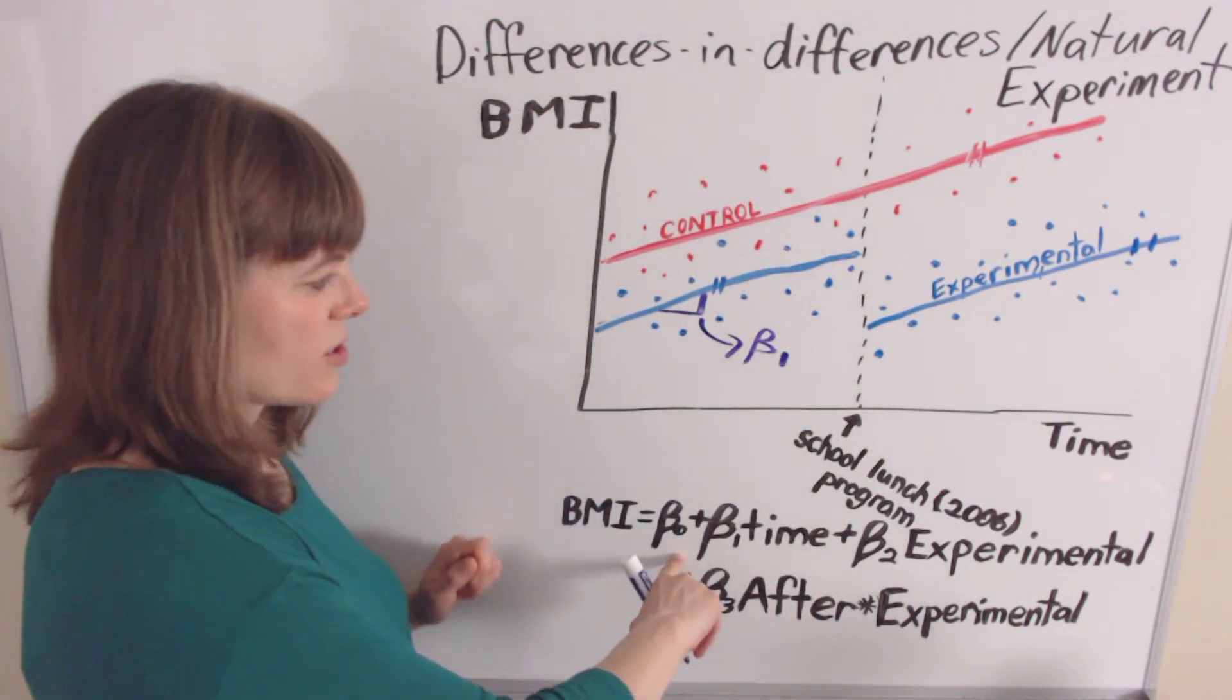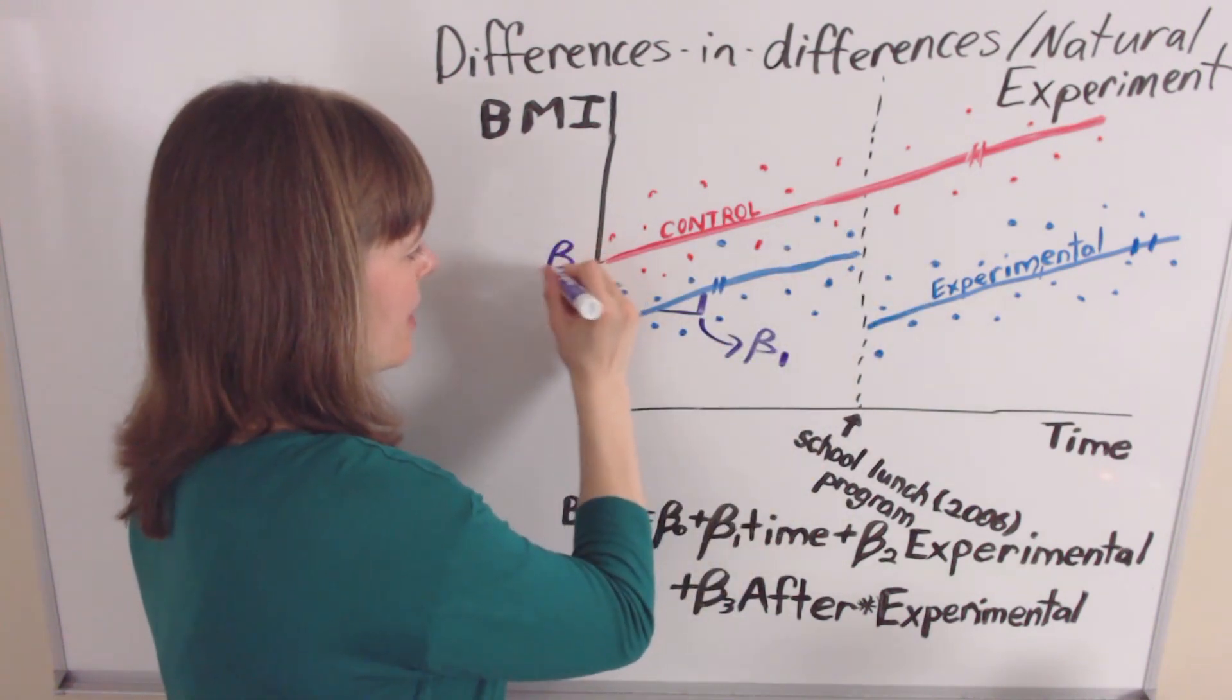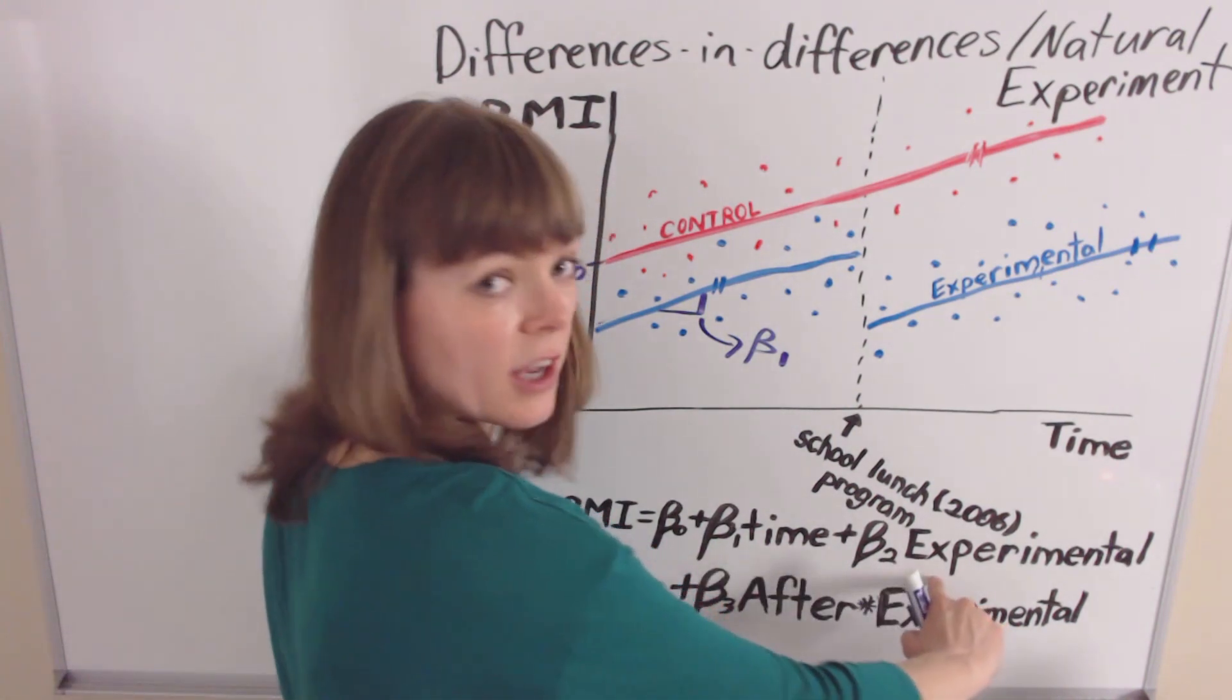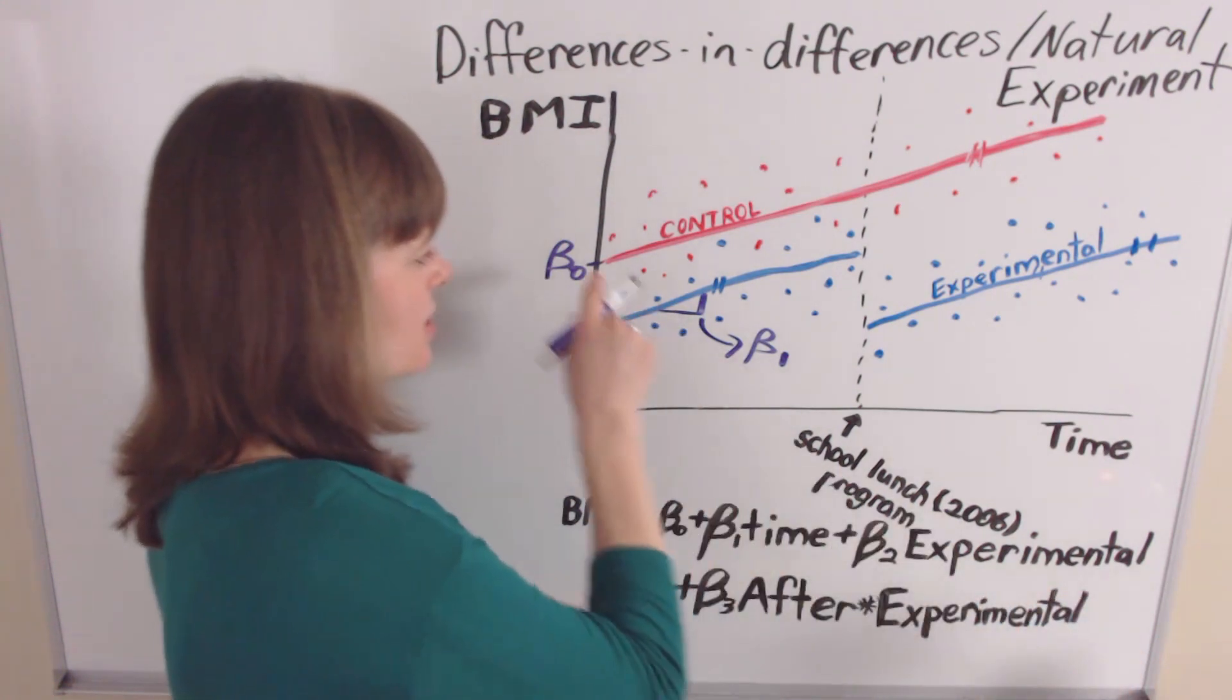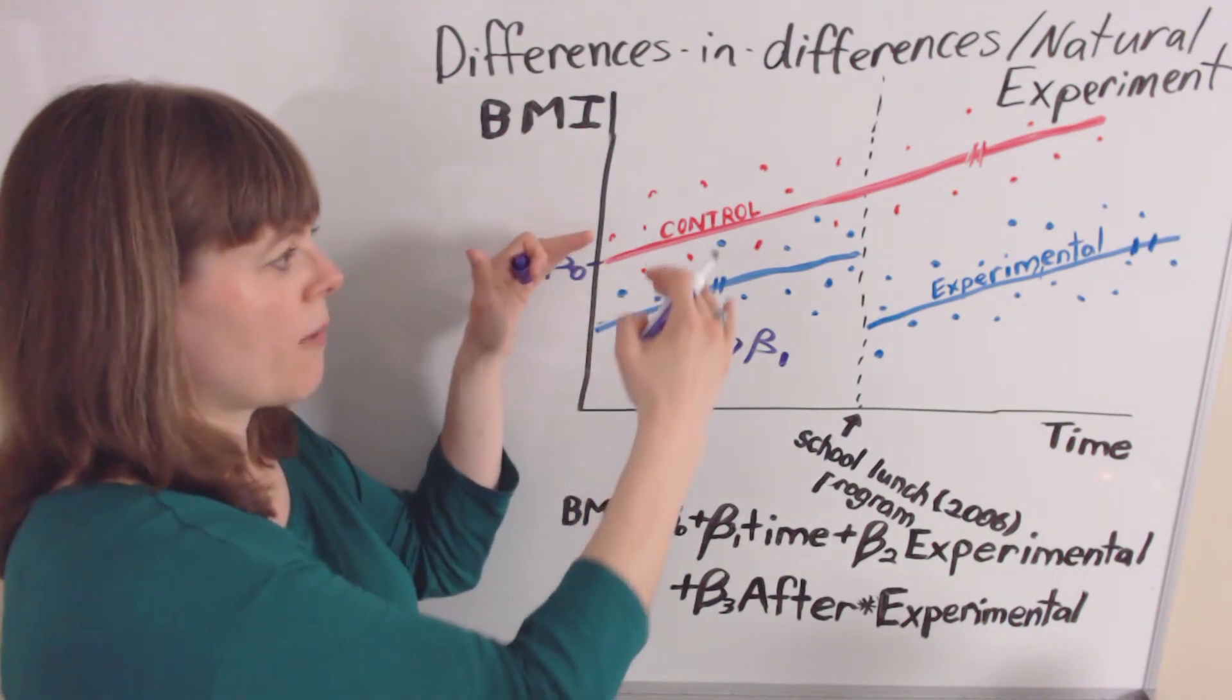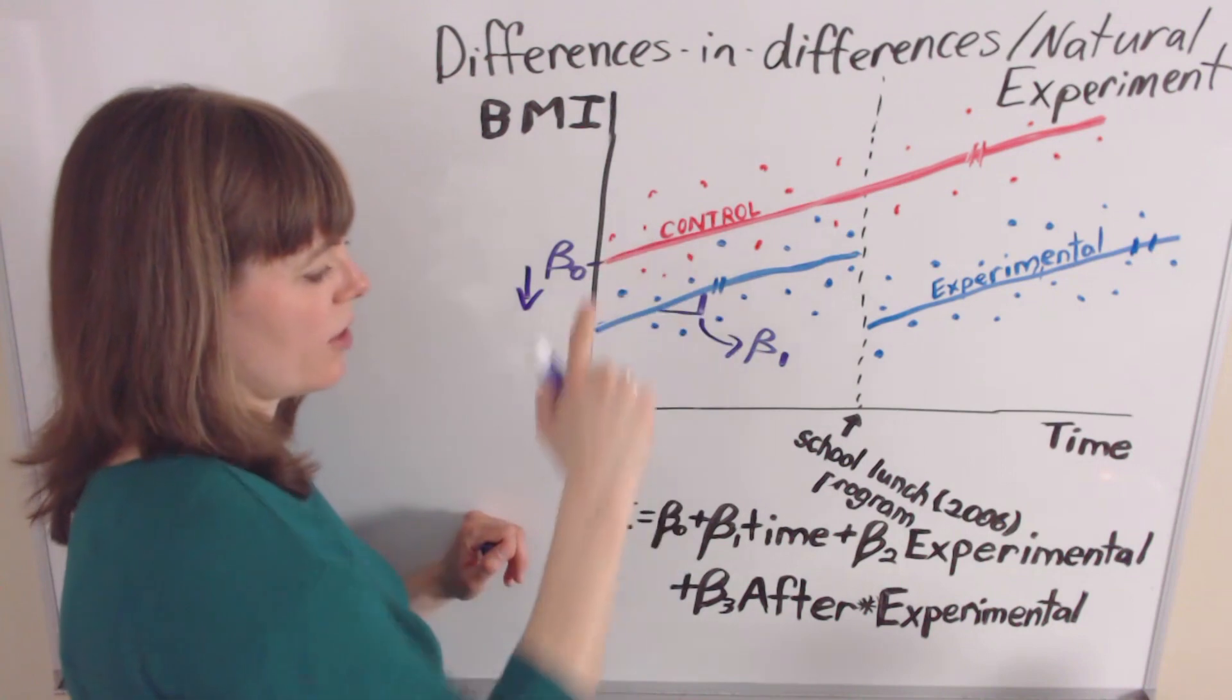The beta naught is going to represent the y-intercept for the control group, so this is beta naught. And the reason for that is because our next variable beta 2 here is going to be associated with our experimental group. So that's going to be the adjustment on the intercept if we're experimental, meaning the experimental group might have a different starting point. In this case, our starting point is actually below beta naught, below the control group.